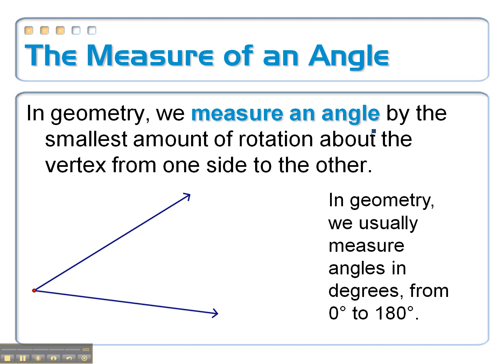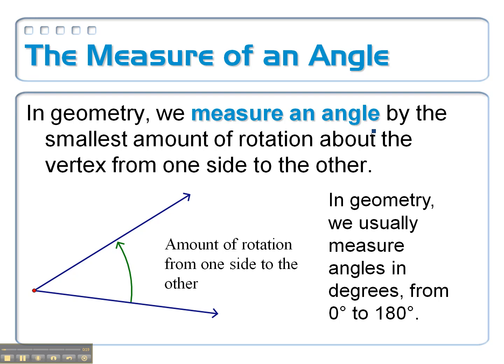Welcome to the surprise videos on angle measurement, both degrees and radians. So in geometry, when we measure an angle, we're measuring the smallest amount of rotation about the origin from one side to the other side. Usually that's a measurement between 0 and 180 degrees.